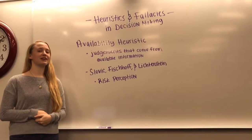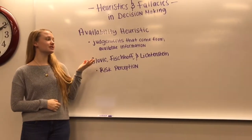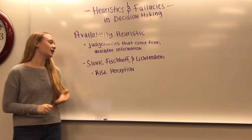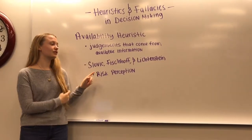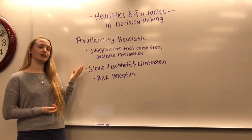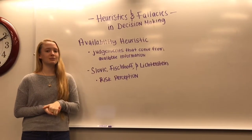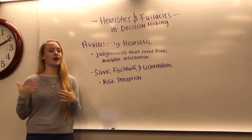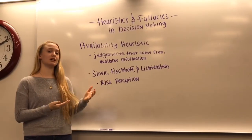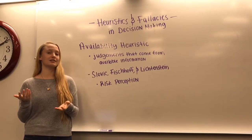The first heuristic we're going to cover today is the availability heuristic. This is judgments that come from your available information, but this might not always be correct. In research by Slavic, Fischhoff, and Lichtenstein, they showed that an example of the availability heuristic is risk perception. This basically means that most people think that accidents occur more often than people dying of, say, a stroke, due to the fact that the news covers accidents more often.